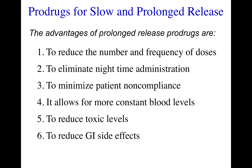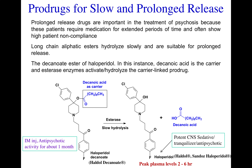There are other drugs that are bipartite carrier-linked prodrugs used for slow and prolonged release. The advantages of prolonged release prodrugs are: reducing the number and frequency of doses, eliminating nighttime administration, minimizing patient non-compliance, allowing more constant blood levels, reducing toxic levels, and reducing gastrointestinal side effects. Prolonged release drugs are important in the treatment of psychosis, because these patients require medication for extended periods of time and often show high patient non-compliance. Long-chain aliphatic esters hydrolyze slowly and are suitable for prolonged release.